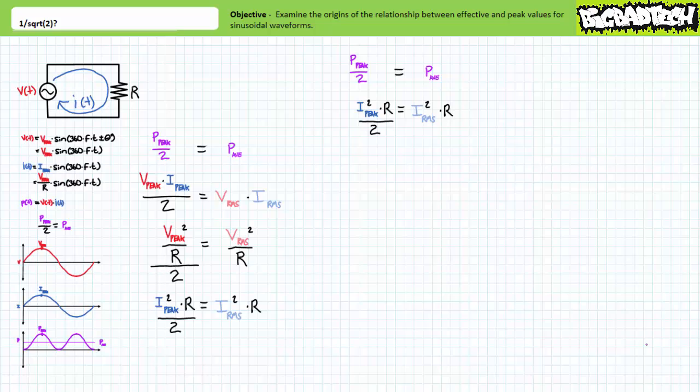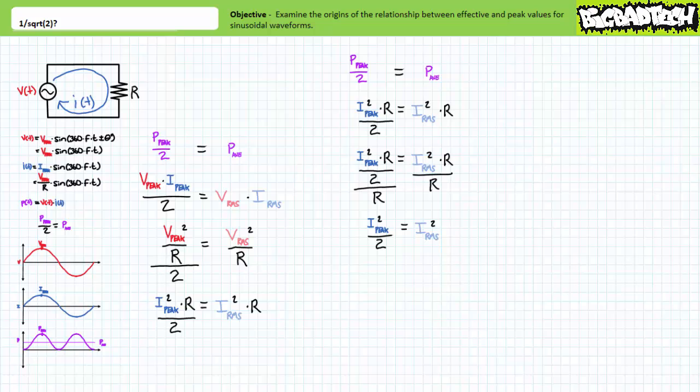We could also demonstrate the origins of one over square root two when solving for effective current values using a similar procedure. Using our third average power formula being equal to current peak squared divided by resistance divided by two, one can also say it equals current RMS squared times resistance. Removing the resistance term from consideration by dividing both sides by R and then taking the square root of both sides ultimately yields current RMS value is equal to the current peak value divided by square root two. In summary, our imagined equivalent effective current equals peak current divided by square root two.